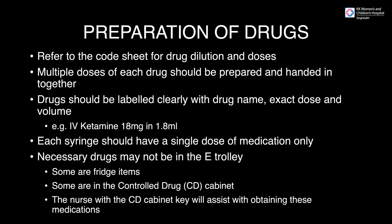Drugs should be labelled clearly with drug name, exact dose and volume — for example, IV ketamine 1.8mg in 1.8ml. Each syringe should have a single dose of medication only. Note that necessary drugs may not be in the e-trolley; some are fridge items and some are in the CD cabinet. The nurse with the CD cabinet key will assist with obtaining these medications.